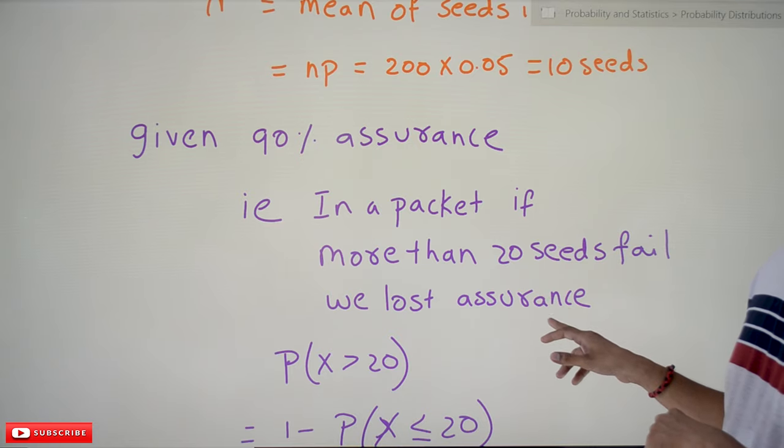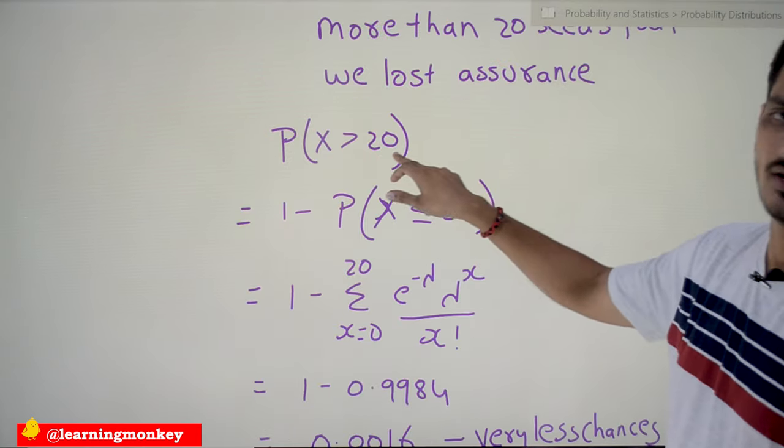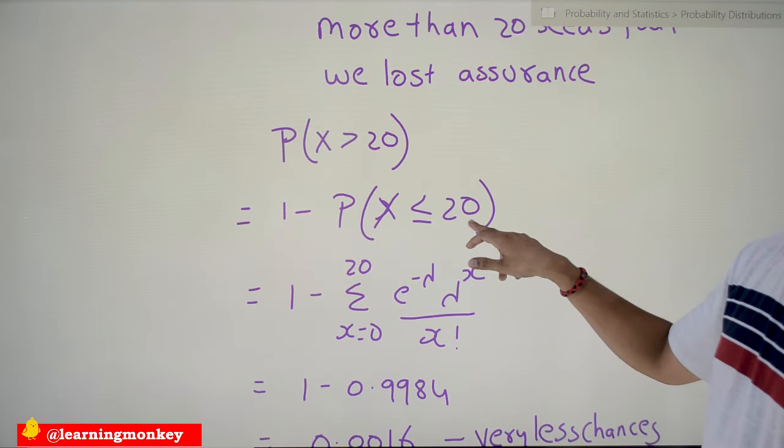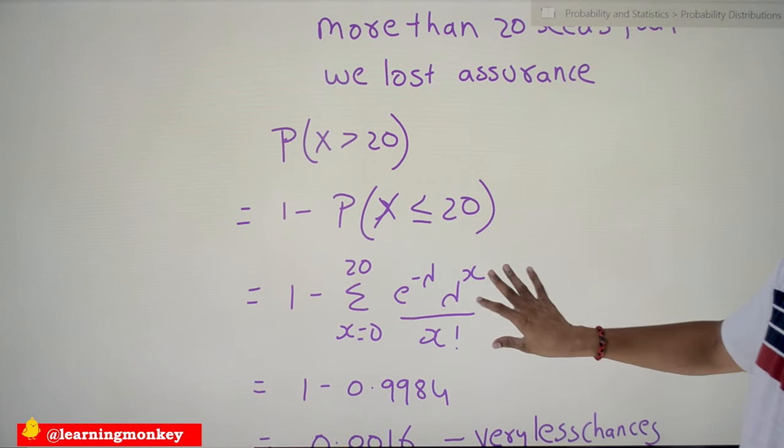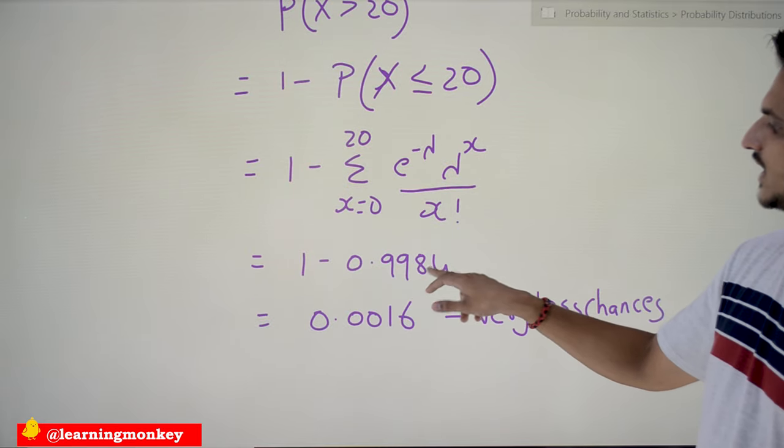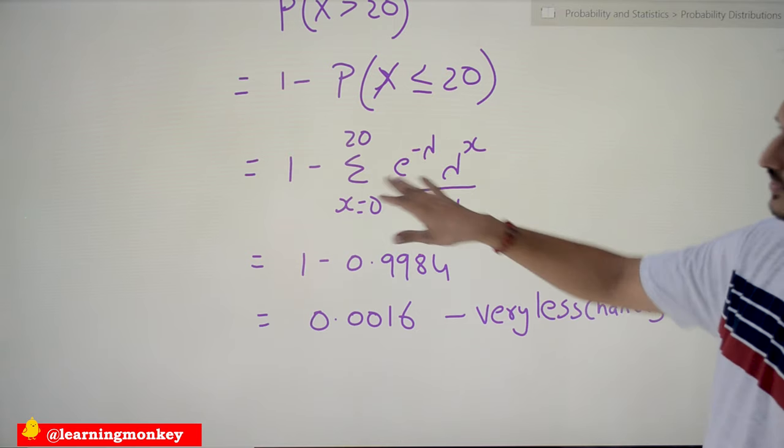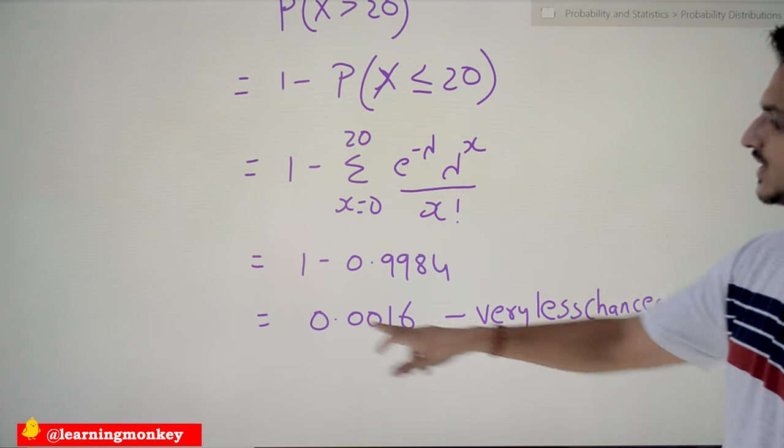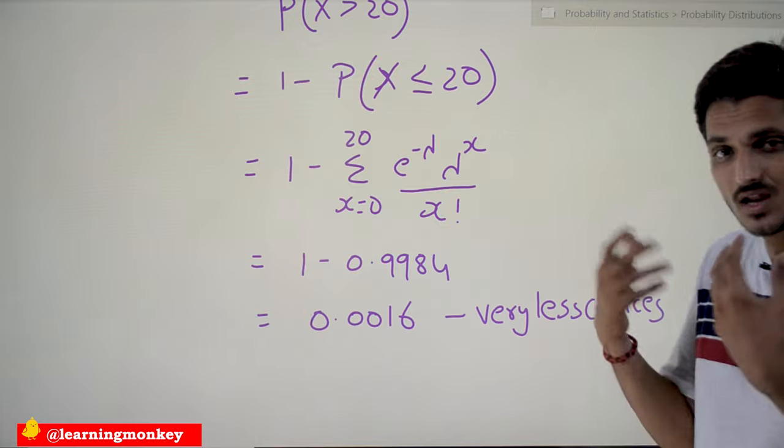So you need to identify probability of x greater than 20, which is given as 1 minus probability of x less than or equal to 20. So less than or equal to 20: 1 minus sigma x equals 0 to 20. If you substitute in the equation, this is the value you will get: 1 minus 0.9984. You need the calculator and all those things to do this because on paper we cannot do this. 1 minus 0.9984, that is 0.0016.